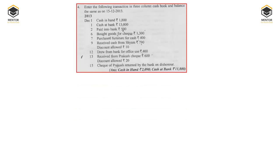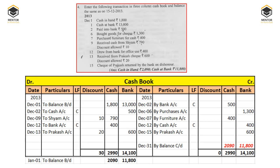We will now take up the first solved question. On December 1st, I have written 'to balance brought down': cash balance 1,800 in the cash column and bank balance 13,000 in the bank column. On December 2nd, paid into bank — this is a contra entry. When paying cash into bank, bank balance increases and cash balance decreases. So on the debit side, 'to cash' is written in the bank column with 500, and on the credit side, 'by bank' 500 is written in the cash column. This transaction is represented with 'C' in the LF column on both sides.